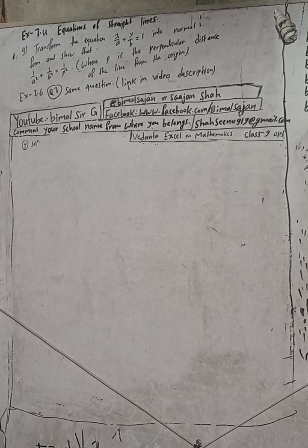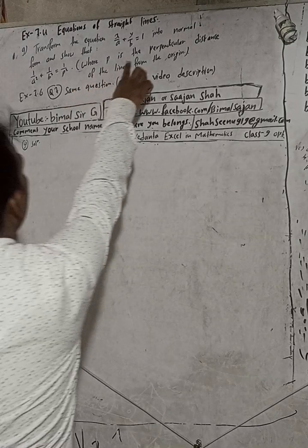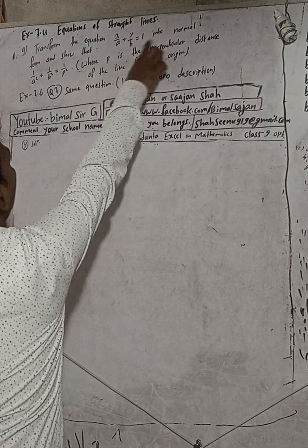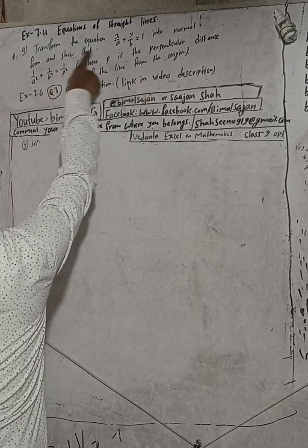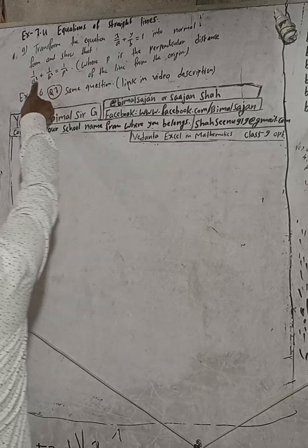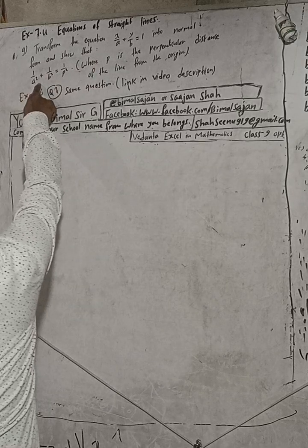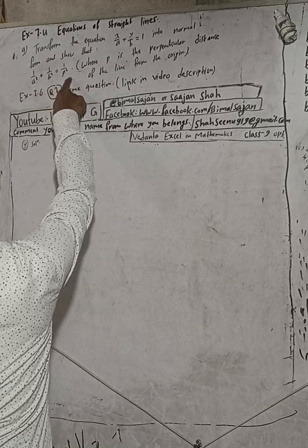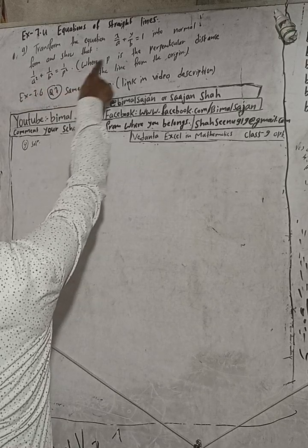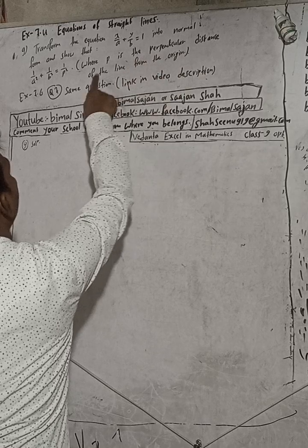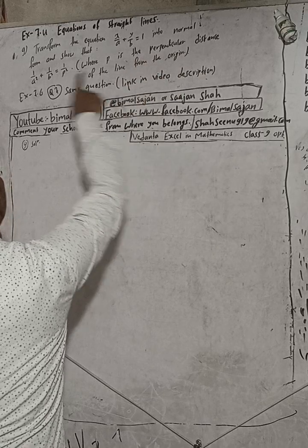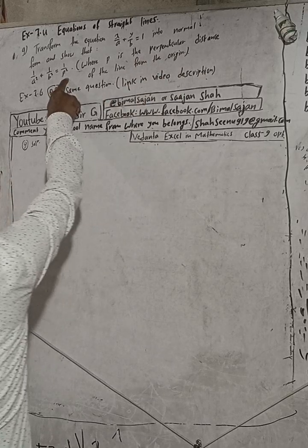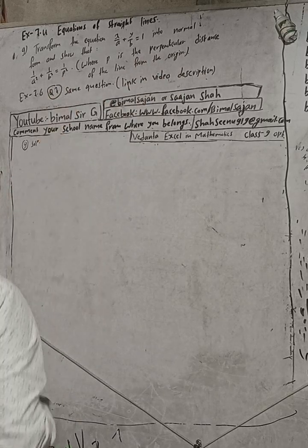So let's begin the solution. Transform the equation x/a + y/b = 1 into normal form, and show that 1/a² + 1/b² = 1/p², where p is the perpendicular distance of the line from the origin.